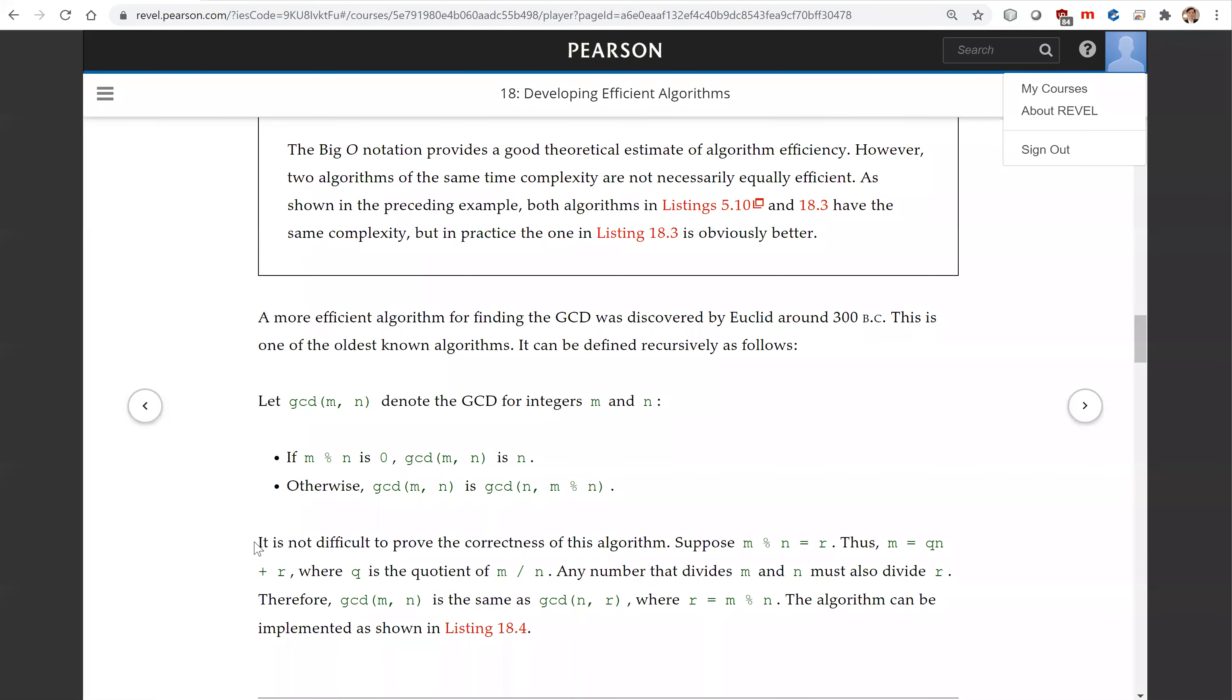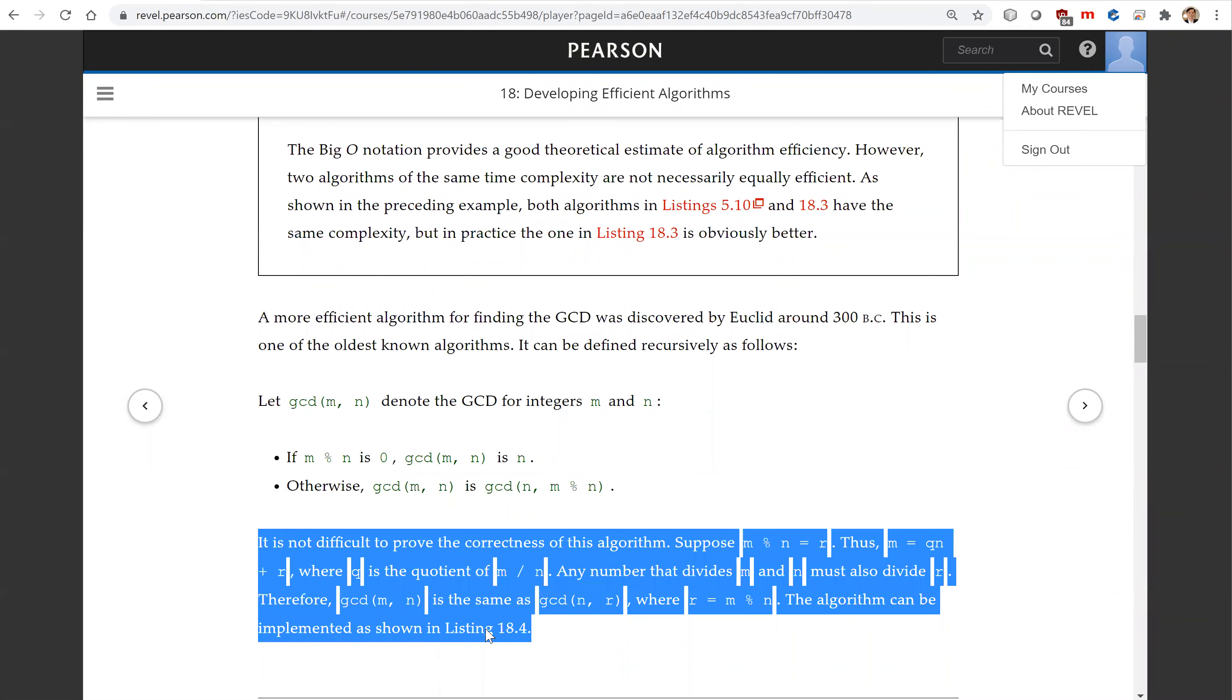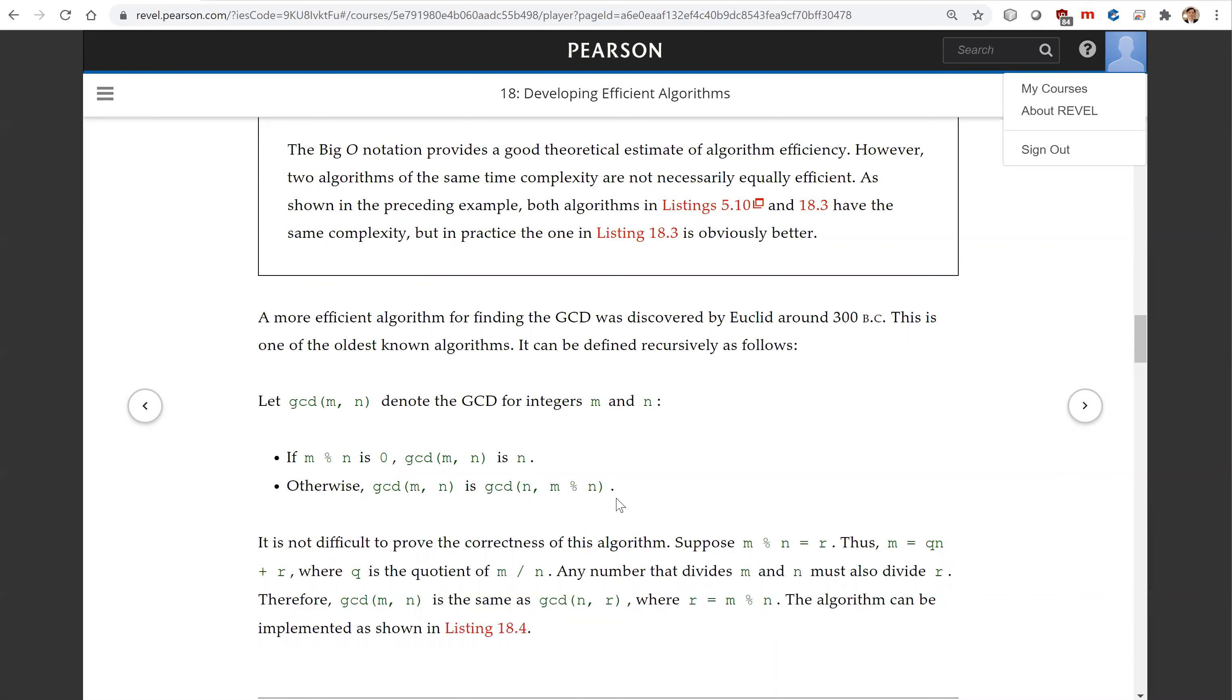There's a simple proof here that you can skip if you want. You'll still be able to write this code because the definition for the recursive program is right here in those two lines.